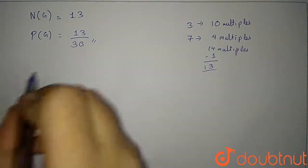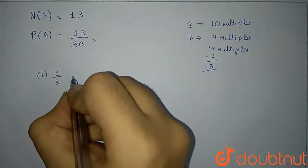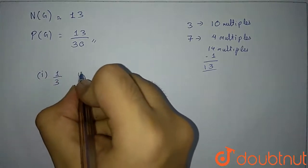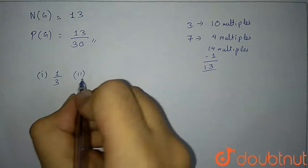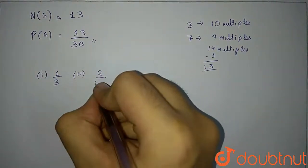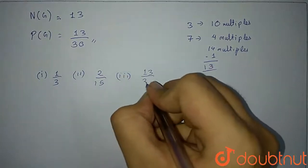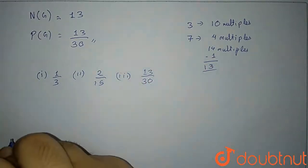Let me write all the answers. The first answer was one over three. The second answer was two upon 15. And the third answer was 13 upon 30. So these are the answers.